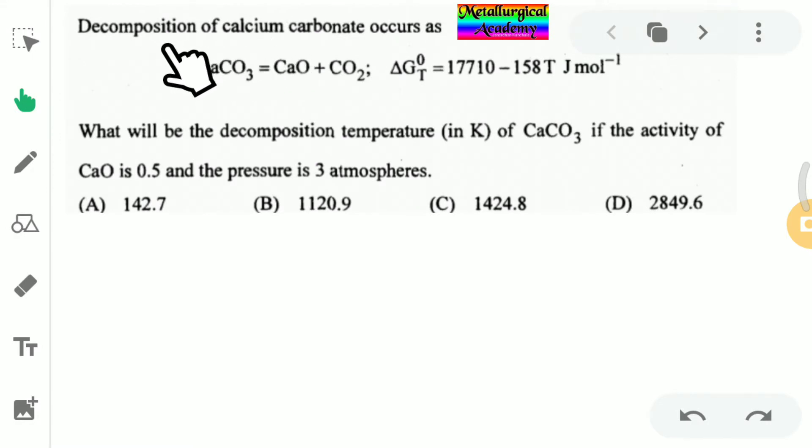We need to find out the decomposition temperature. The question is: decomposition of calcium carbonate occurs as CaCO3 decomposes into CaO plus CO2. Here the delta G value was given. What will be the decomposition temperature we need to find out?